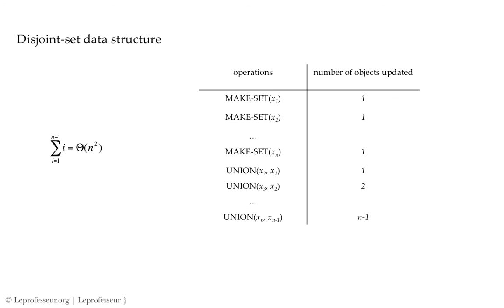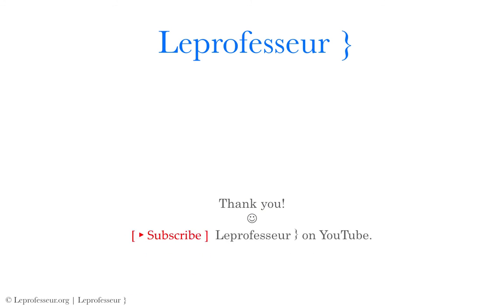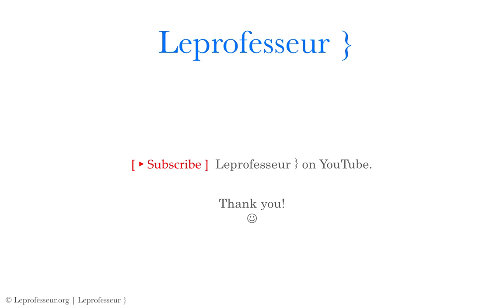That was a basic discussion about disjoint sets, which are heavily used in graph algorithms. Some other applications include image analysis, alias analysis, and classifying atoms in molecules. Thank you for enjoying this lecture, for your wonderful comments, and for subscribing to the Lee Professor YouTube channel. We appreciate your feedback and support — have a wonderful day!